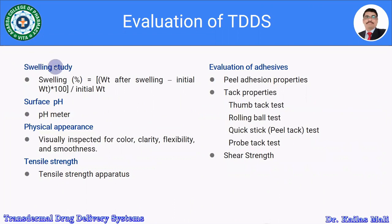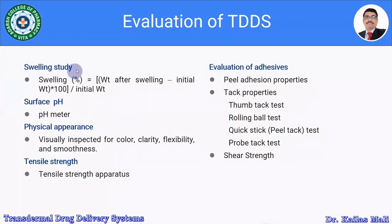Swelling studies are performed because many polymers used in transdermal patches are swellable. A suitable solvent or phosphate buffer is used for swelling studies. Percent swelling is determined by the formula: percent swelling = (weight after swelling − initial weight) × 100 / initial weight.